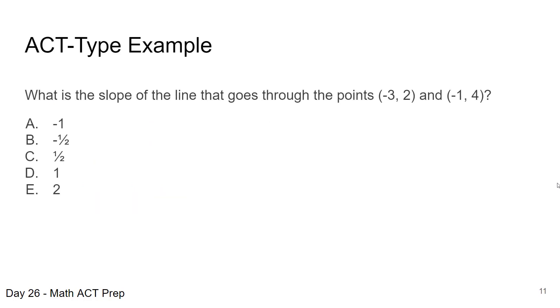So let's take a look at this ACT type example. Pause the video. Work this question. And we'll come back and work it together. The question asks, what is the slope of the line that goes through the points negative 3, 2 and negative 1, 4? So here we're given two points and we want to find the slope. We're going to make use of our equation y2 minus y1 divided by x2 minus x1. We're just plugging in those values from our point. And when we simplify, we get answer choice D, 1. Our slope is 1 for these two points.